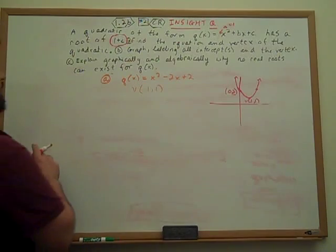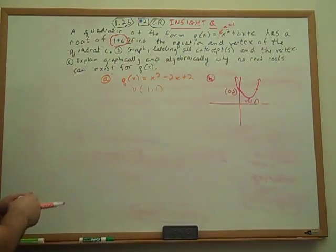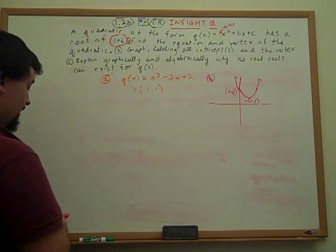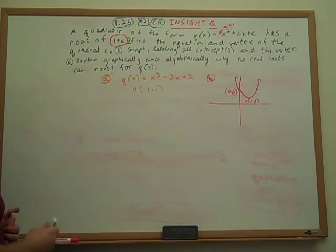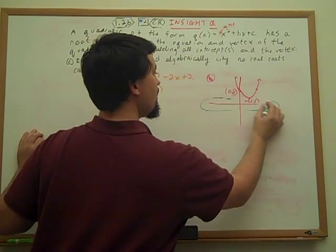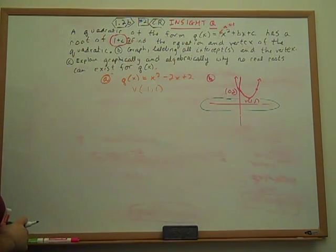Part C will be a breeze. There are a couple of different ways of thinking about C algebraically. We'll start off with the graphical part. The most obvious thing is when we have no intersections on this axis, on this x-axis, that means there will be no real roots.